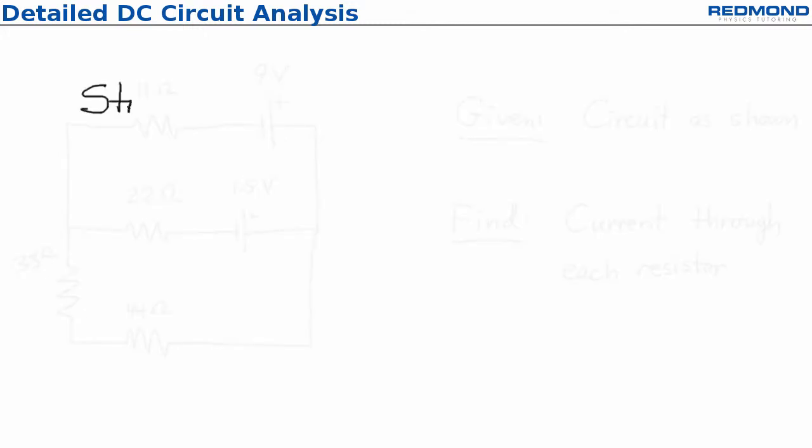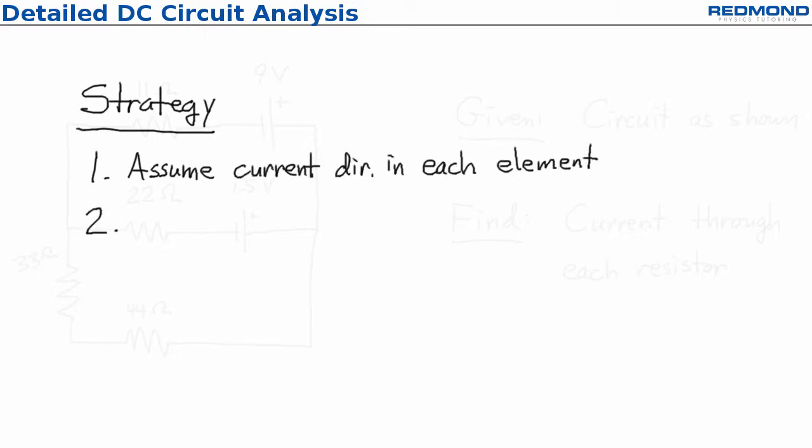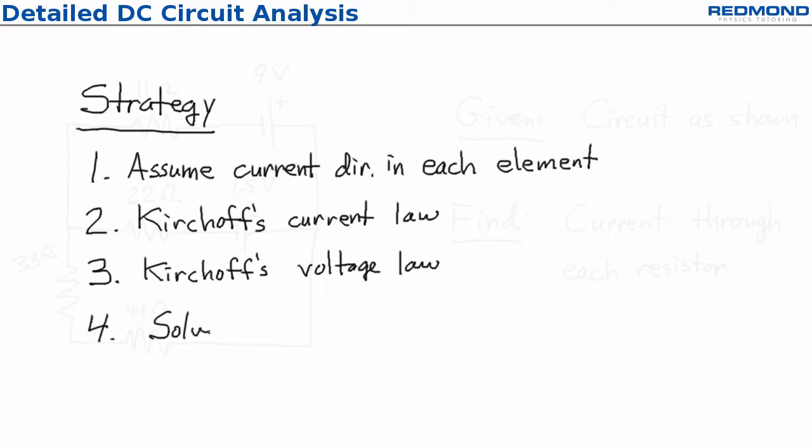The strategy has three easy steps plus algebra. First, assume a direction for the current in each circuit element. Second, apply Kirchhoff's current law, also known as the junction rule. Third, apply Kirchhoff's voltage law, also known as the loop rule. And finally, solve the algebraic equations. There's no physics in this part, it's just math.